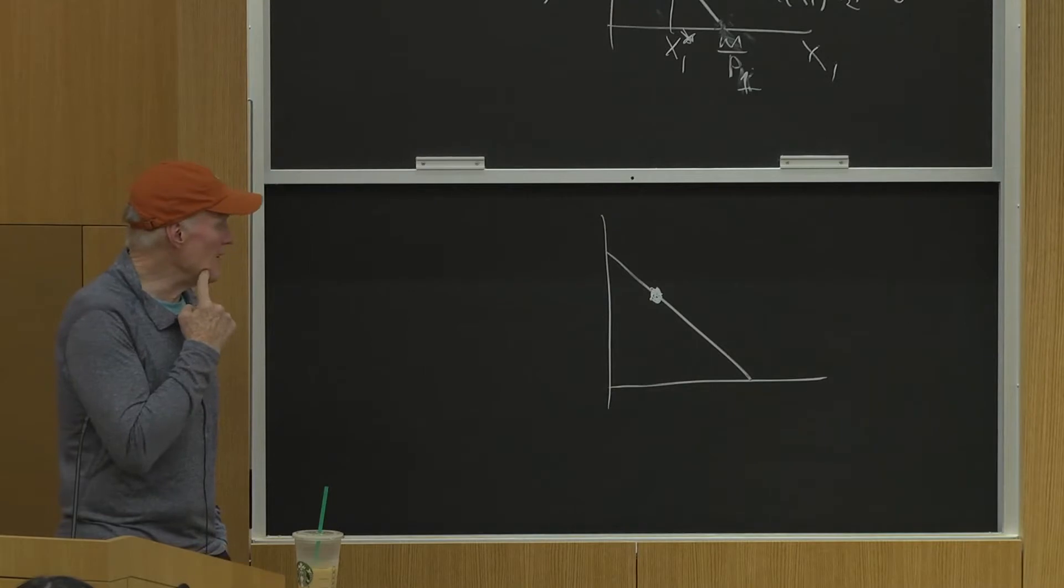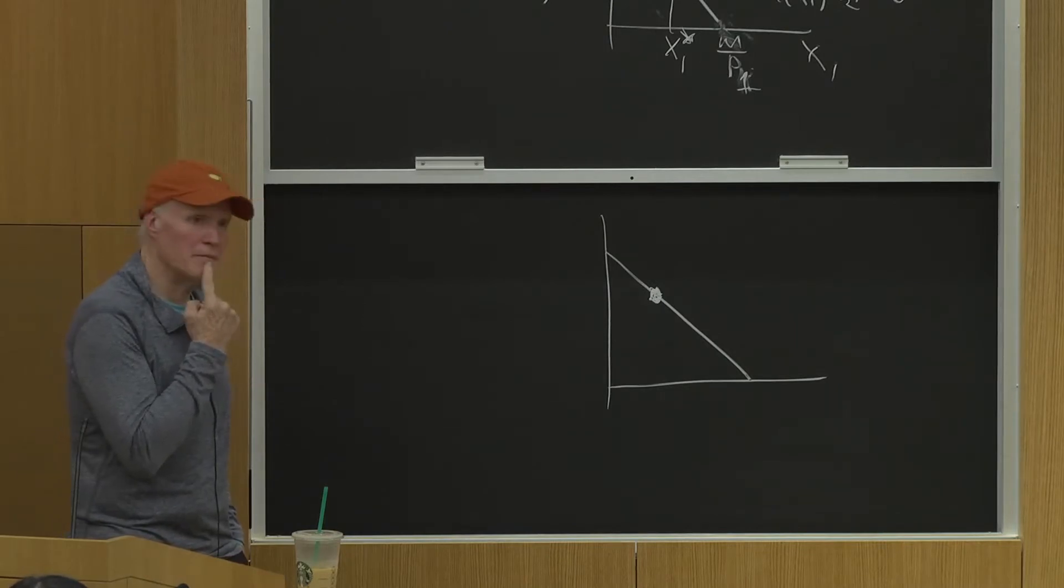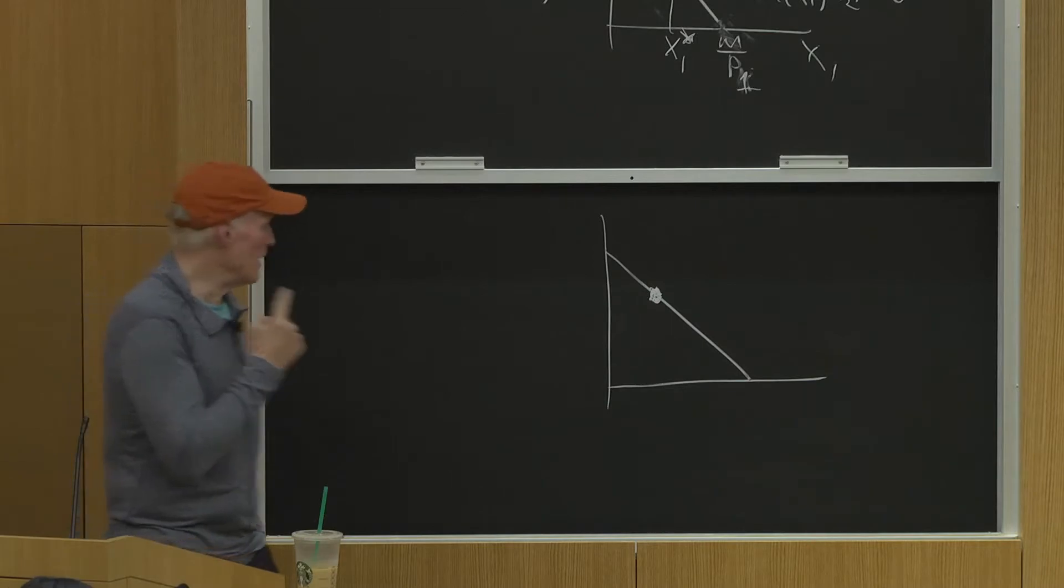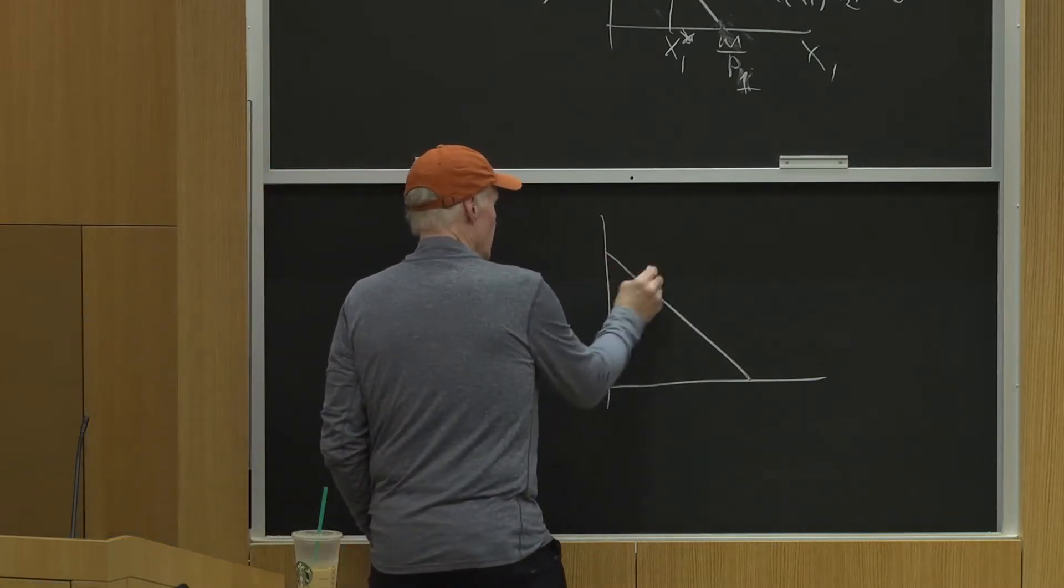So where, and then I change prices, and I change the prices and hold the utility constant. Where could my equilibrium be? Could I get an equilibrium? Let me say these are the new prices. They have this slope.